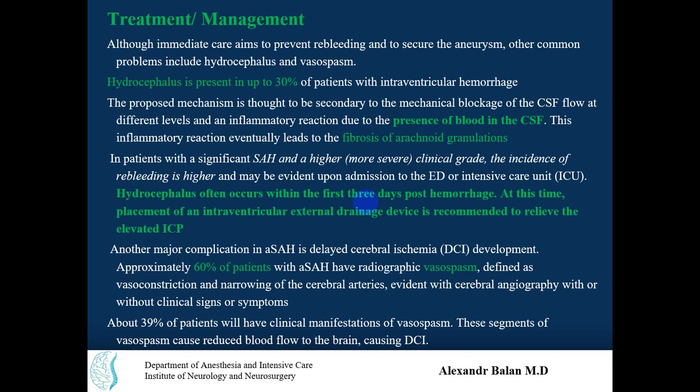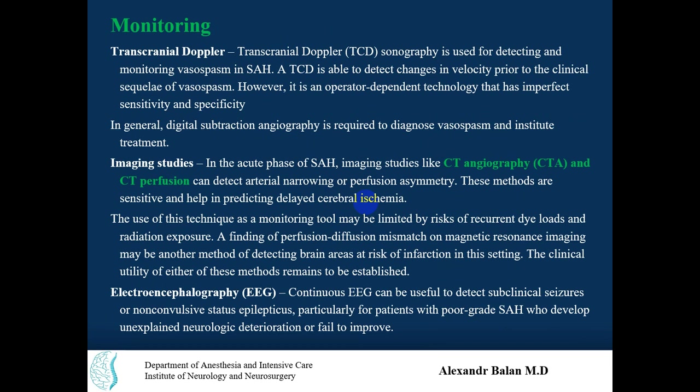Approximately 60% of patients with subarachnoid hemorrhage have radiographic vasospasm, defined as vasoconstriction and/or narrowing of the cerebral arteries evident on cerebral angiography, with or without clinical signs and symptoms. One-third or more of patients will have clinical manifestations of vasospasm, meaning some vessel segments are constricted and blood flow is reduced and redirected. Transcranial Doppler sonography is used for detecting and monitoring vasospasm. CT angiography and CT perfusion can detect arterial narrowing or perfusion asymmetry. Continuous electroencephalography can detect subclinical seizures or non-convulsive status epilepticus.